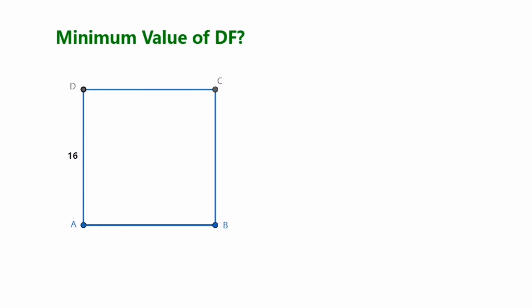Square ABCD with sides length of 16 units. E is a free point on the side AB. Connect the DE. Let's take segment EF, perpendicular to segment DE, F is on segment BC. Connect DF. What is the minimum value of segment DF?